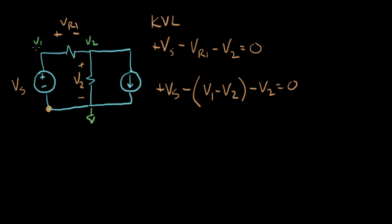But I forgot, VS and V1 are the same voltage. So this is actually V1 minus V1 minus V2, minus V2 equals zero. And if we look at this equation, that goes, that goes, plus V2 minus V2.